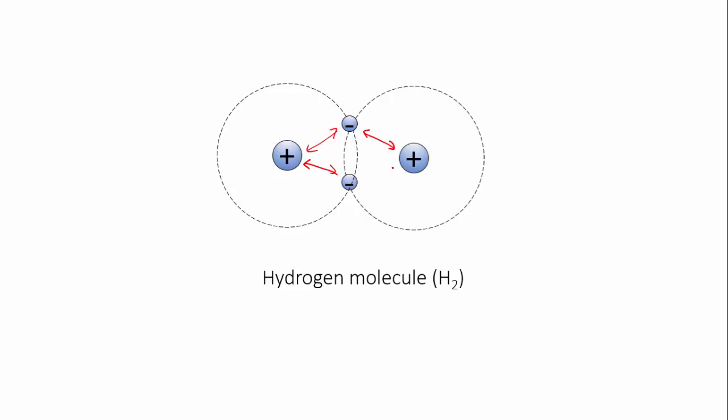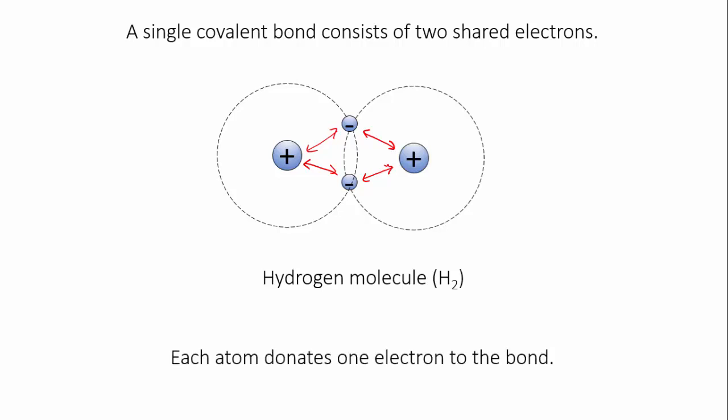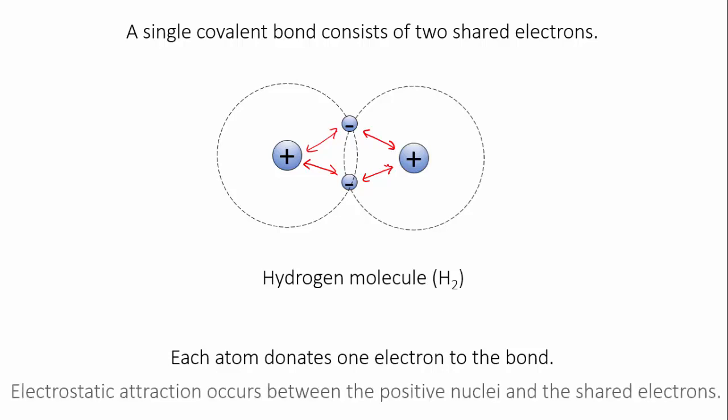A covalent bond always consists of two electrons. When two atoms form a covalent bond, the usual situation is that each atom donates one electron to the bond, although there are examples where one atom will donate both.